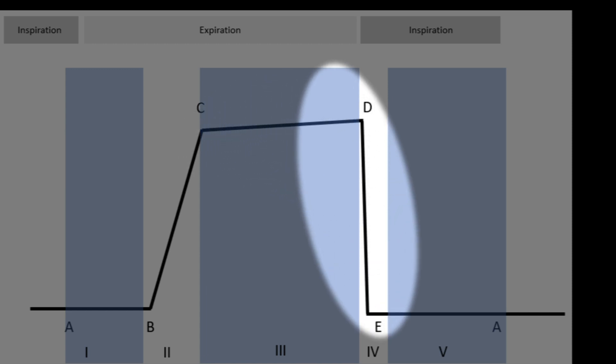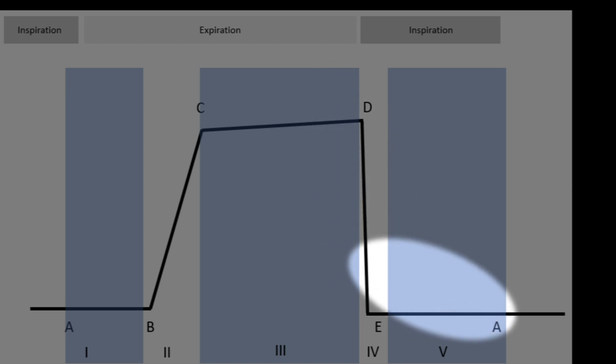Phase four, D to E. This is the beginning of the next breath, and the CO2 is returning rapidly to zero. Phase five, E to A. During inspiration, the CO2 value is normally zero, so we return to the baseline.